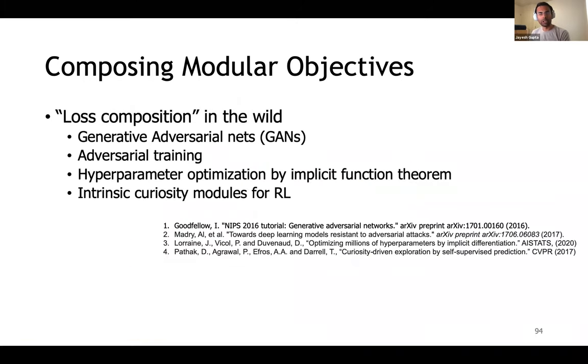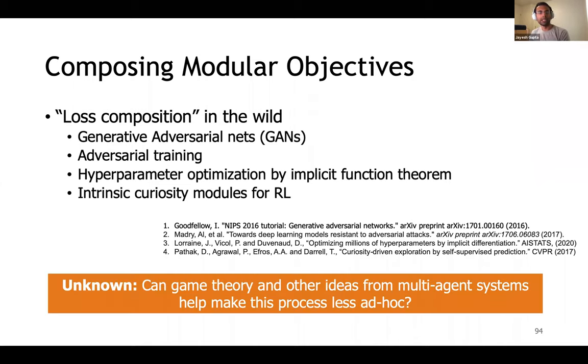But my intuition is that modularity can be recovered with appropriate composition of multiple modular objectives. We've already started seeing some of it in the context of adversarial training and generative adversarial nets in the context of supervised and unsupervised training. Some of it has also been explored in reinforcement learning in the form of intrinsic auxiliary objectives. However, I believe that ideas from game theory, especially mechanism design, can help us make this process less ad hoc.